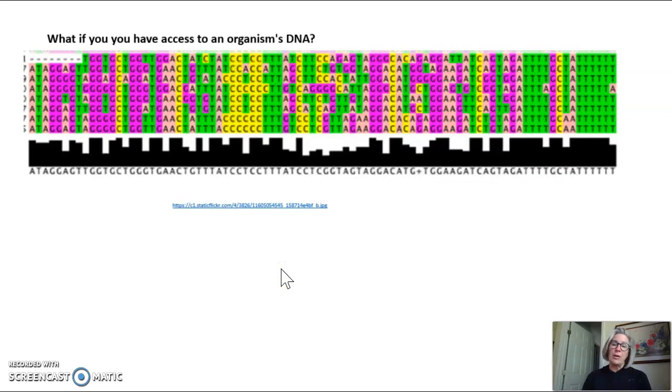What if you have access to an organism's DNA? Remember, DNA has four nucleotides. They're A, C, G, and T. And the genetic code is the order of these four nucleotides. What if you could compare the different orders of the nucleotides in different organisms? Scientists can actually sequence DNA in the lab really quickly. So this is something that scientists can do. And when they do this, they use what's called the DNA species concept.